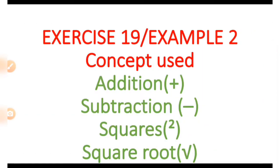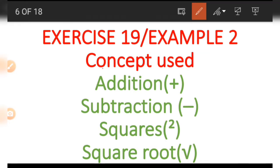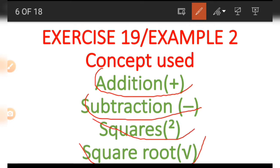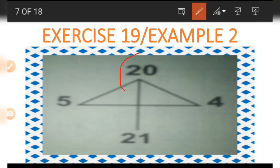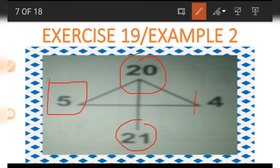In Example 2 of Exercise 19, we have the concepts of addition, subtraction, square of numbers, and square root. The shape looks like an umbrella with a 20 on top and a 21 underneath. The 20 and 21 are connected because they are going to be added. The five on the left and the four on the right are also connected.